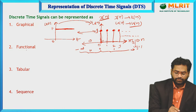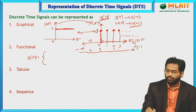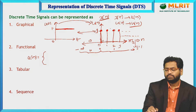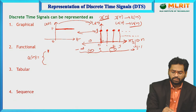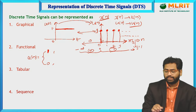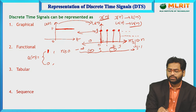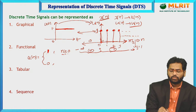The functional form of u(n): we have either amplitude 1 or amplitude 0 only. Where n ≥ 0, the amplitude is 1 (0 is also included). Where n < 0, the amplitude is 0. This is the functional representation of the signal.